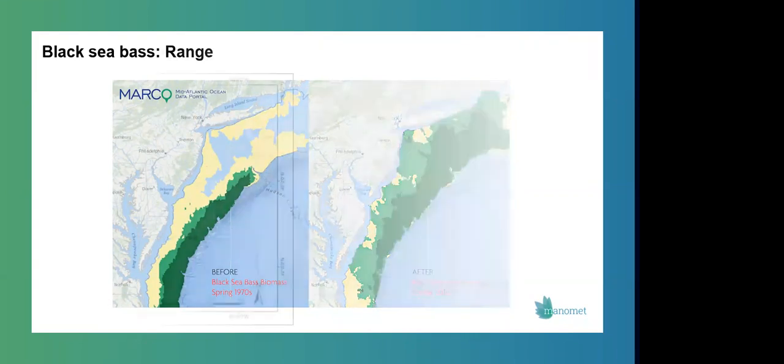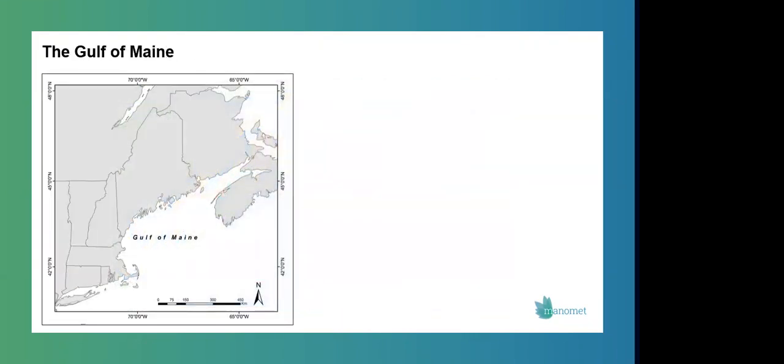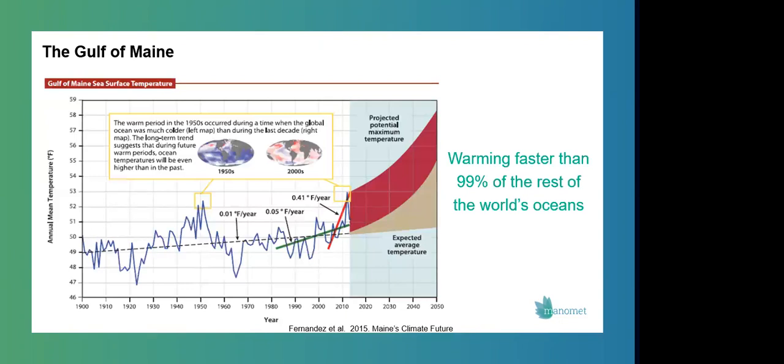Now, I want to just slightly pivot here and talk a little bit more in detail about the Gulf of Maine and what's going on here specifically. So the Gulf of Maine is the body of water bordered by Massachusetts, New Hampshire, Maine, and Nova Scotia. And it historically was one of the richest fishing grounds in the world. But today we're actually seeing the Gulf of Maine is warming faster than 99% of the rest of the world's oceans.